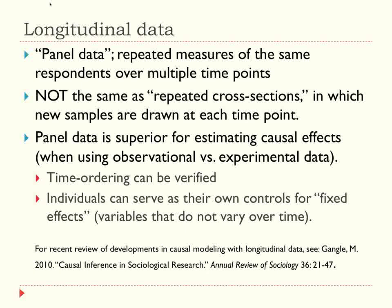Experiments are the gold standard for studying causation, but often we can't do experiments for the kinds of questions we're interested in for logistical and ethical reasons. So we use observational data. Panel data helps establish causation because you can verify time ordering. The classic phrase is correlation is not causation — and one reason you might go wrong is misunderstanding whether X causes Y or Y causes X. With panel data, at least we can figure out which came first.